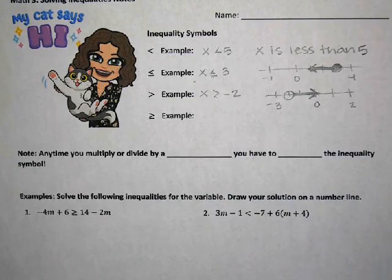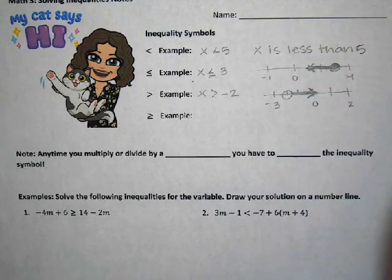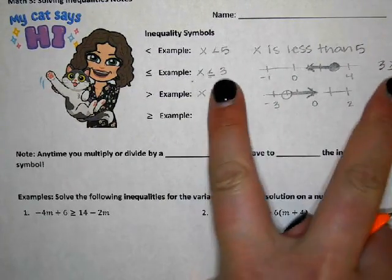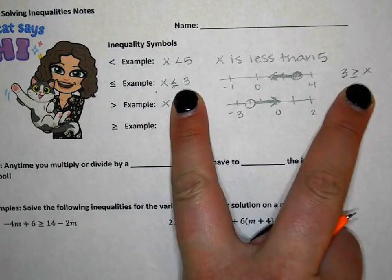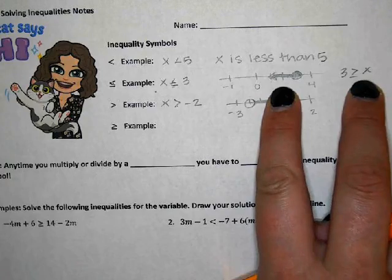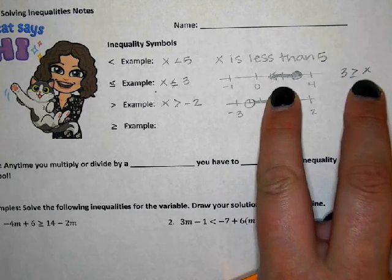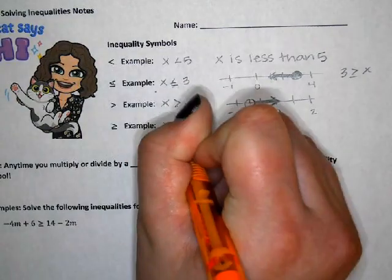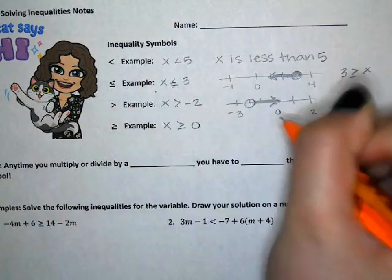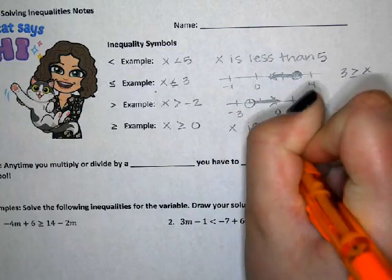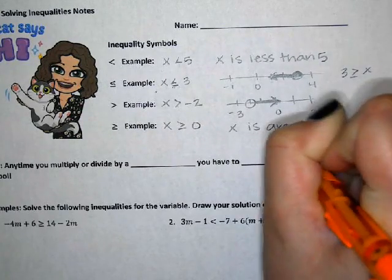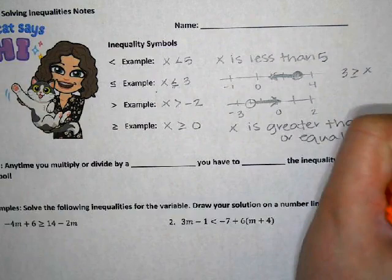This same answer can be written as 'three is greater than or equal to x' — these are equal, they're the same. But the arrows don't match up here because the variable is written on the right side. The arrows only match if the variable is written on the left. The last example: x is greater than or equal to zero.